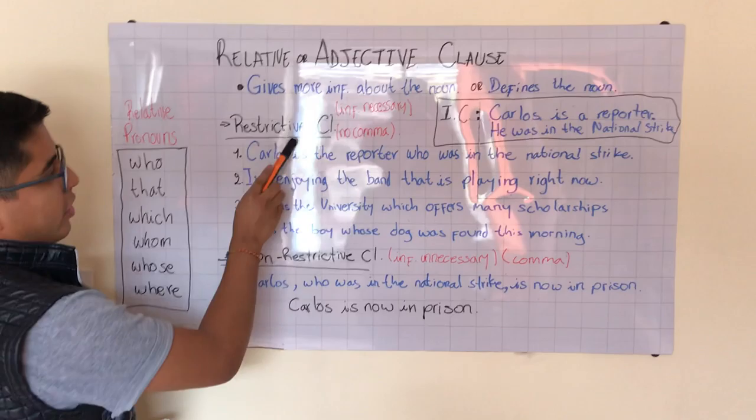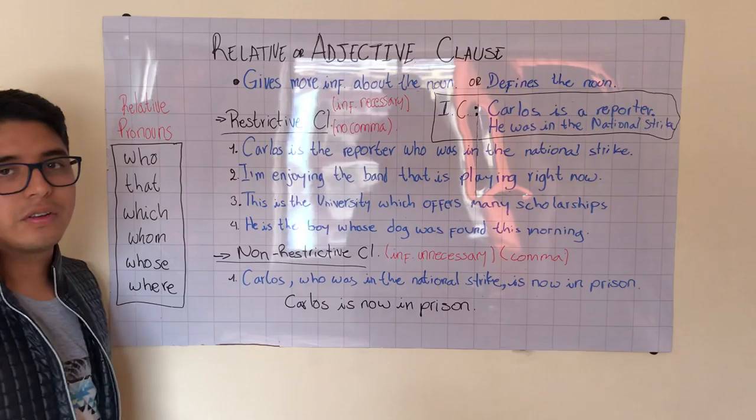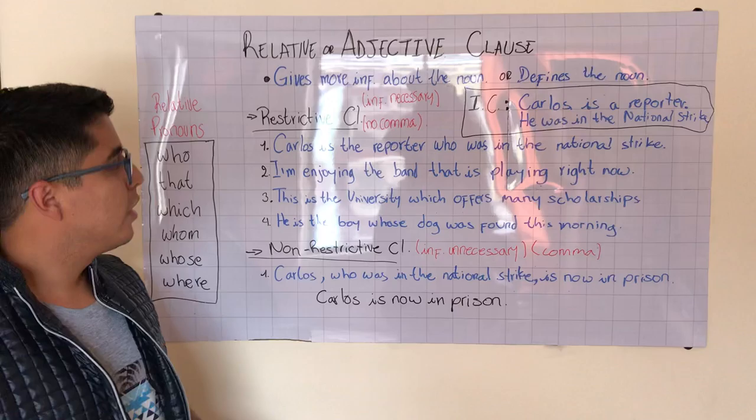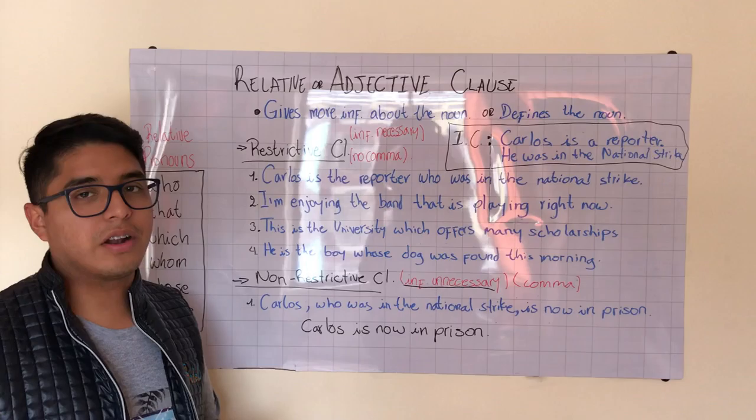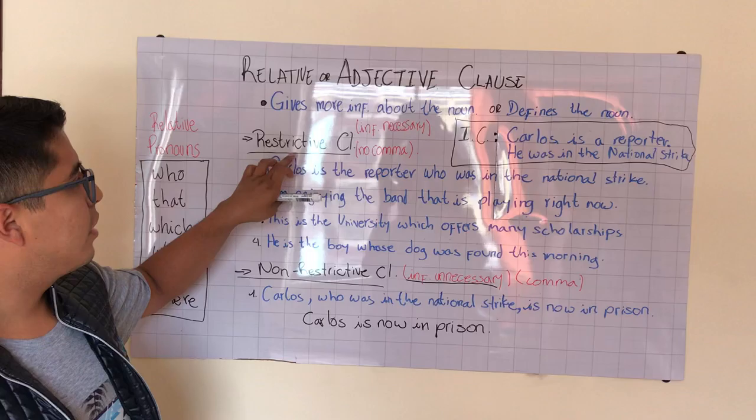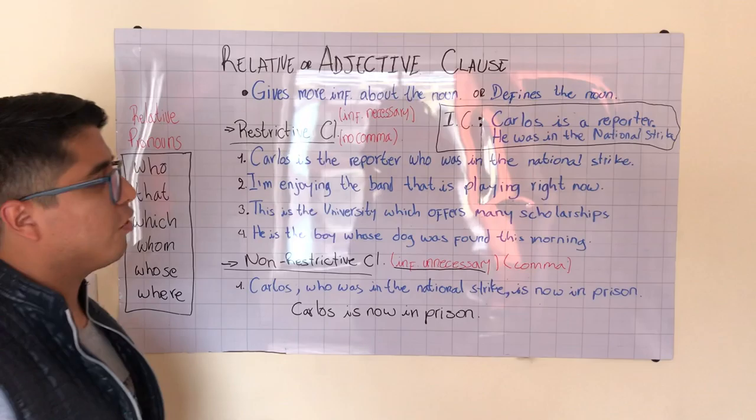Adjective clauses are divided into restrictive clauses and non-restrictive clauses. Restrictive clauses contain necessary information — information that is essential to the clause. Non-restrictive clauses contain information that can be omitted; it may or may not be necessary, as the clause still makes sense without it.